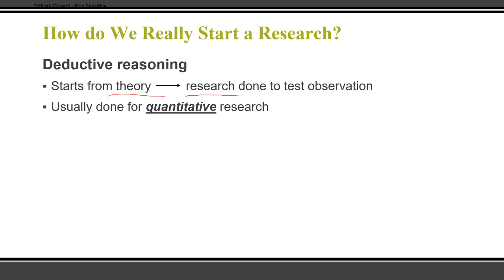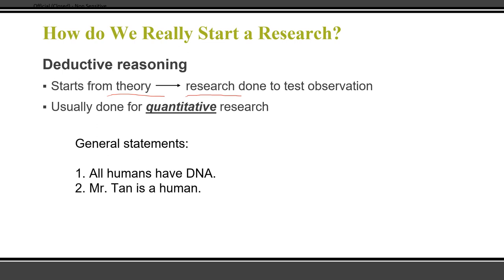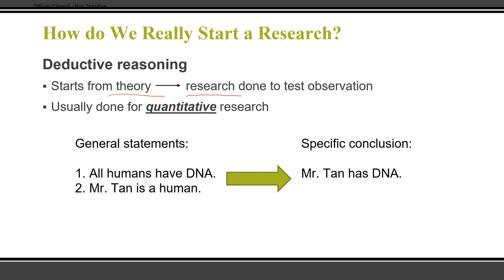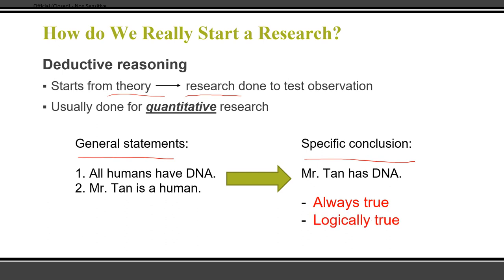Let me give you an example of deductive reasoning. We usually start with a general statement — for example, all humans have DNA. Second statement: Mr. Tan is a human. These are the two general statements. From here we draw a specific conclusion: Mr. Tan has DNA. As long as the general statements are true, the conclusion will also be true. For deductive reasoning, the conclusion is always true as long as the general statements are true.